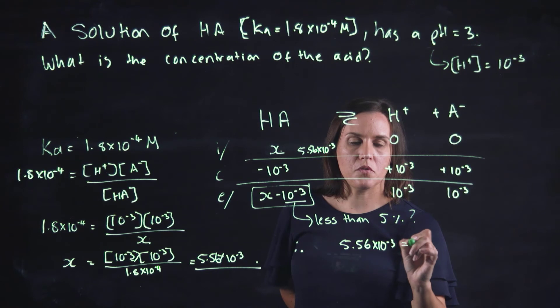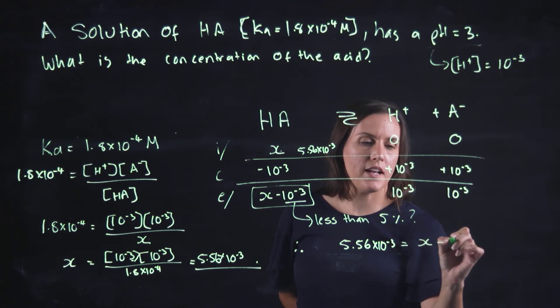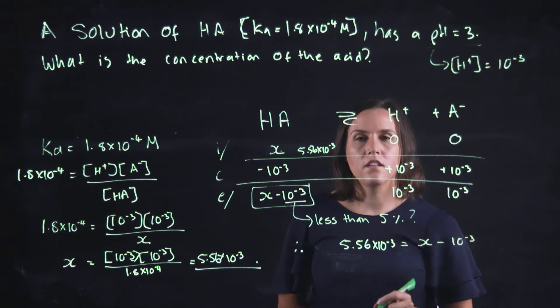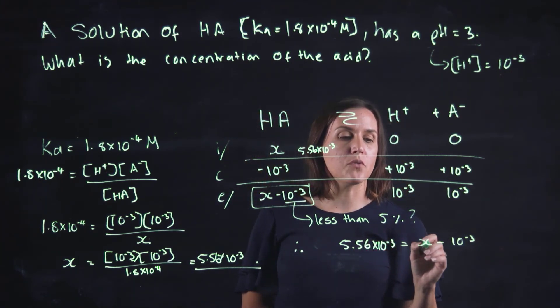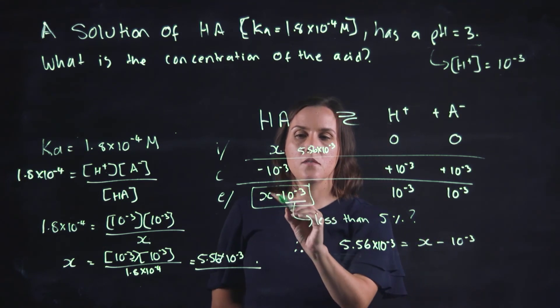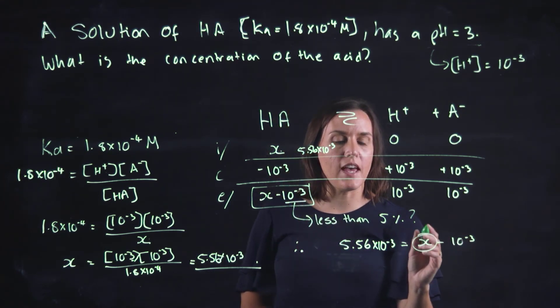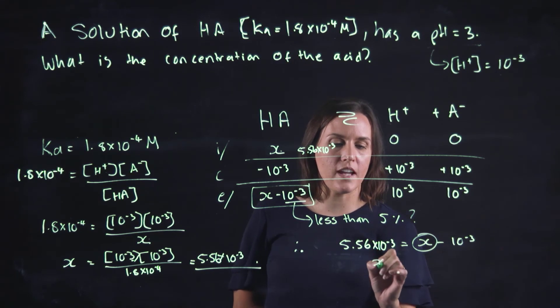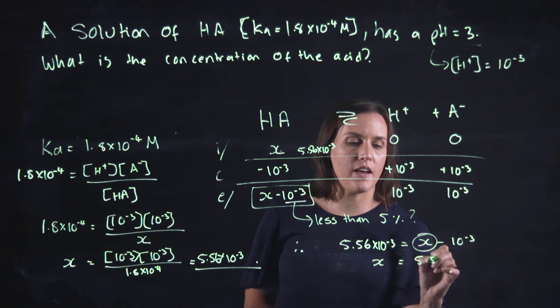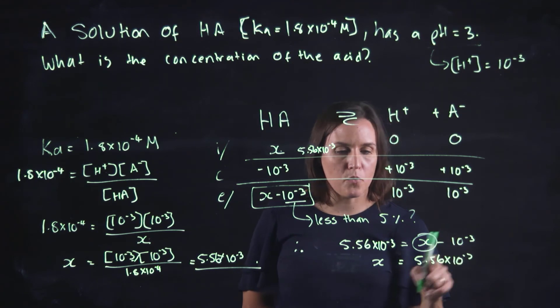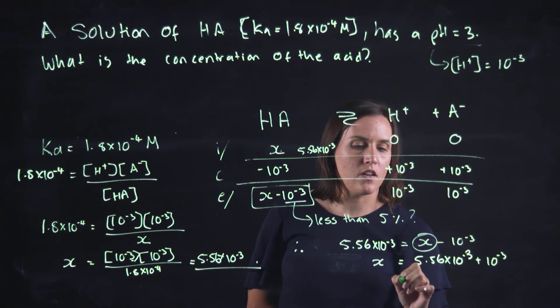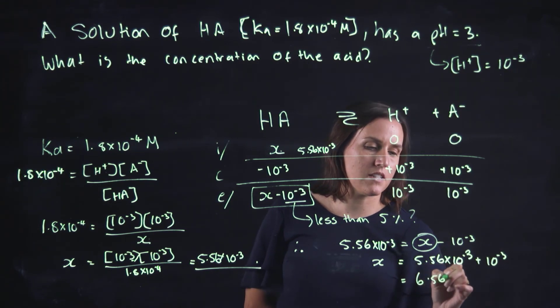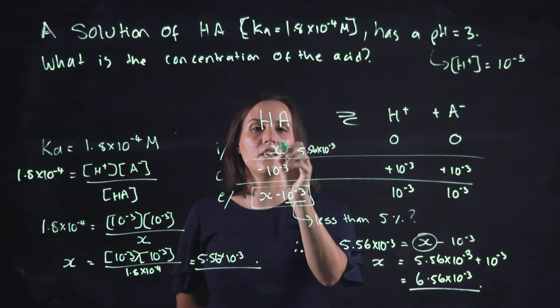So that equals X minus 10 to the minus 3. So this is 5.56 by 10 to the minus 3 equals X minus 10 to the minus 3. So then solving for X, I can rearrange. So I get 5.56 by 10 to the minus 3. I will be bringing that over to the other side. So it's plus 10 to the minus 3, which gives me 6.56 times 10 to the minus 3. And that would be my initial value here.